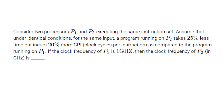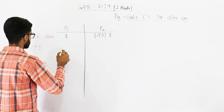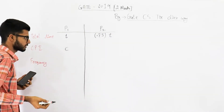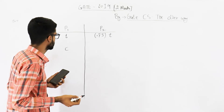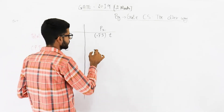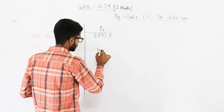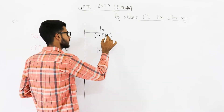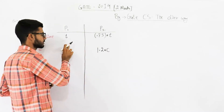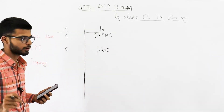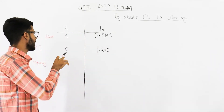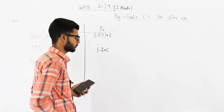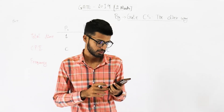But P2 incurs 20% more CPI. So if CPI in processor P1 is C clocks per instruction, then for P2 it is 20% more, that means 1.2 times C. Because 20% of C is 0.2C, and adding it to C gives 1.2C. That's just given in the question.